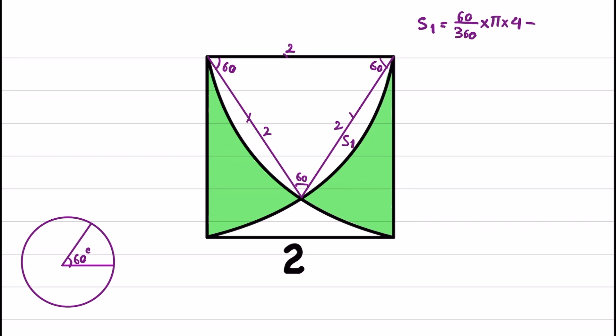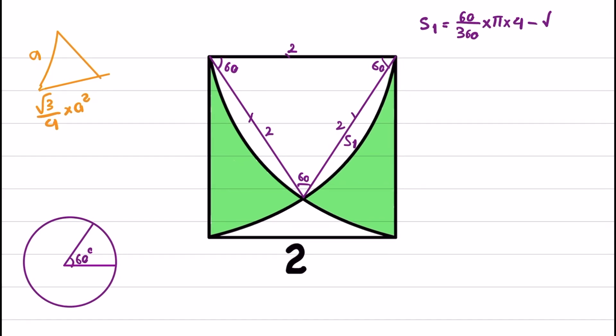I'll use one hint: if we have an equilateral triangle with side A, the area is √3/4 times A². Using this formula, we get √3/4 times 2², which is 4. So S1 equals 2π/3 minus √3. Now we know the area of this part.